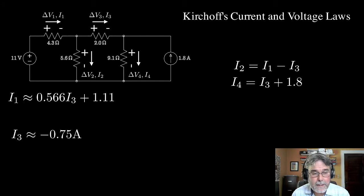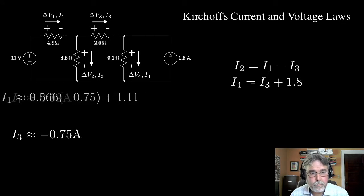Now once I have I3 isolated, I can put it back into the equation above. I can solve for I1. So let's do that. And then we get a result for I1 is 0.69 amps.